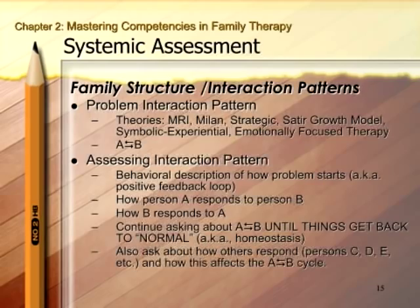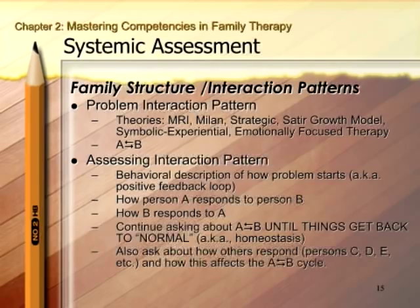How do you actually go about assessing this interactional pattern? It does get a little tricky. The first thing is to start with a behavioral description of how the problem starts. If a family is coming in saying their son has tantrums, you would say, 'Tell me, give me a description of what happens at the beginning of one of these tantrums.' This is the beginning of the positive feedback loop in systemic language. Most likely the mother will start by saying the son is having a tantrum, and then you would ask how she responds to it, how the father responds, and then how the child responds to their response. You keep going and asking about how people are interacting in this sequence.